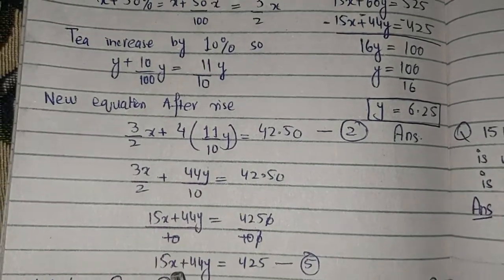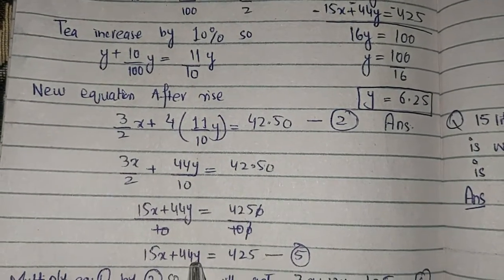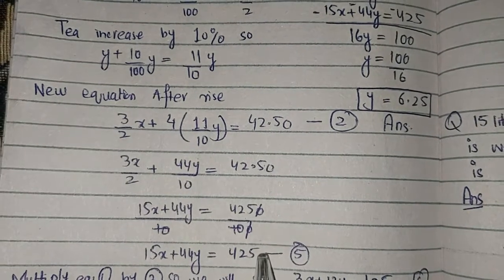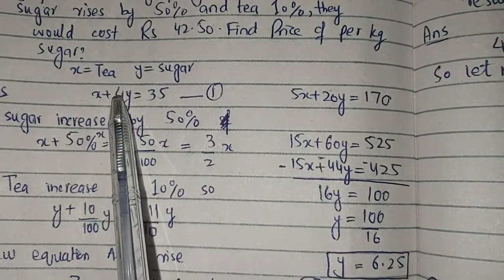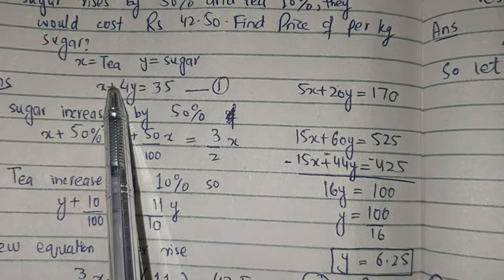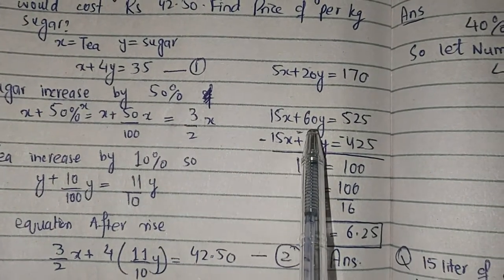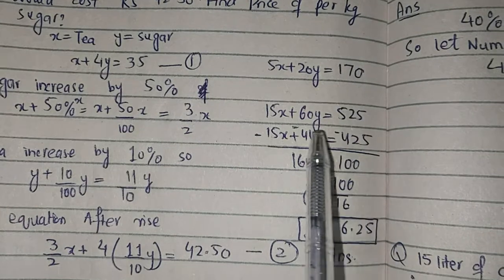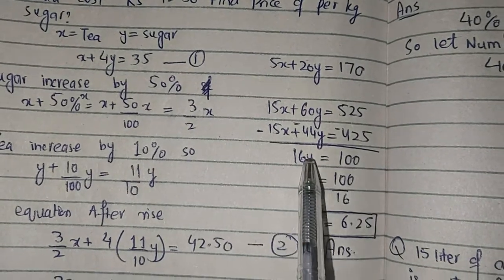Solving the equation: 15x plus 44y equals 425. Multiply equation 1 by 3, we get 15x plus 60y. Now solve this equation system.